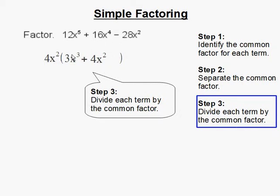And I'm going to do the same thing for the second term. 16 divided by 4 gets me 4. X to the fourth divided by x to the second is x to the second.